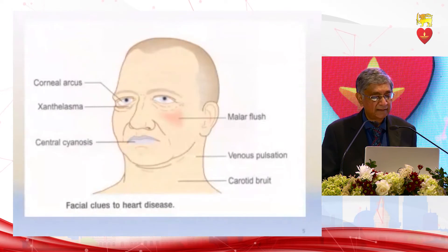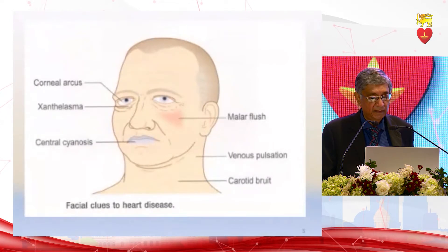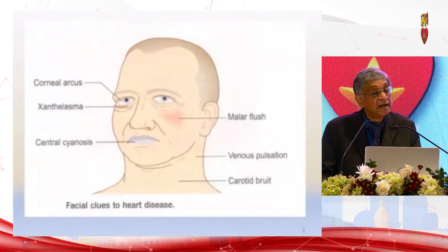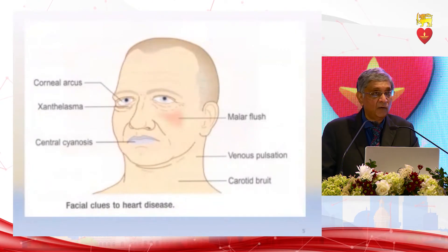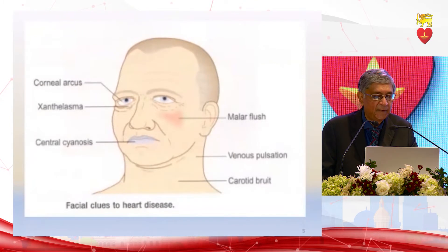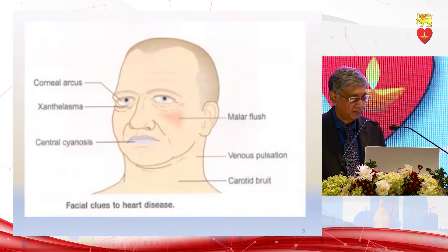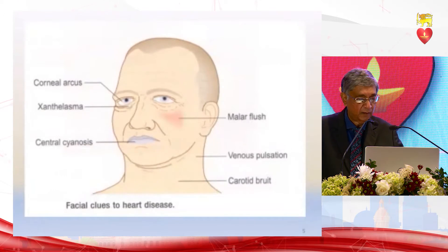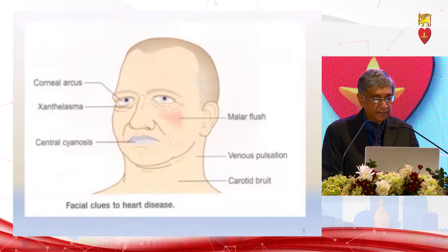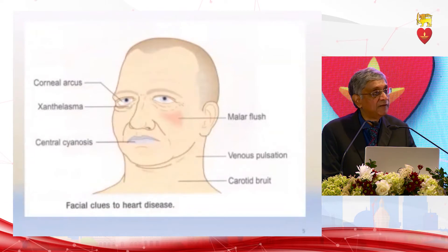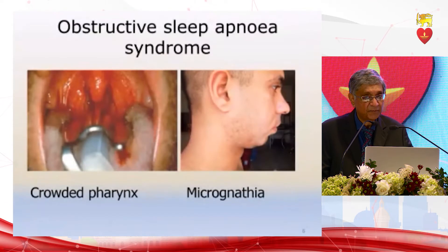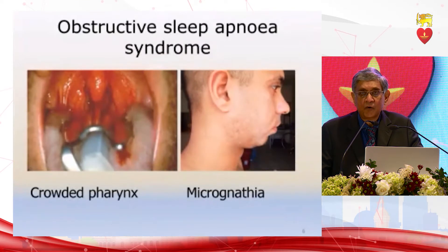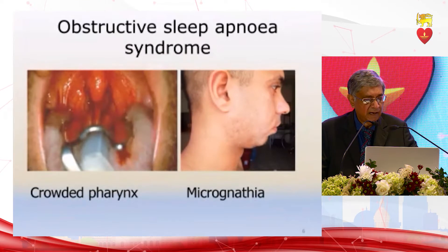You see the malar flush, which occurs in mitral stenosis — seen most often only in fair-skinned people and only in mitral stenosis with pulmonary hypertension. In the neck, look for venous pulsations and carotid bruits, and in the lips look for central cyanosis. Obstructive sleep apnea syndrome is now increasingly recognized as a risk factor for ischemic heart disease.